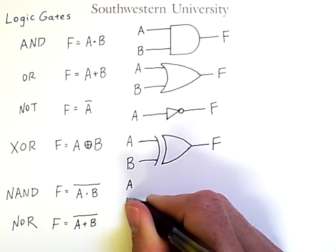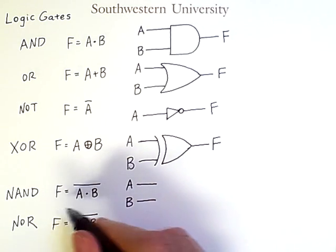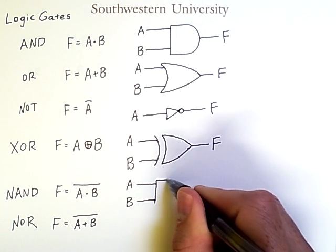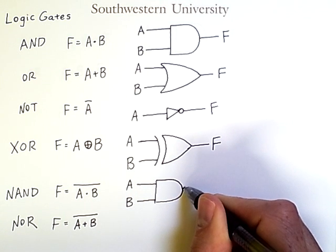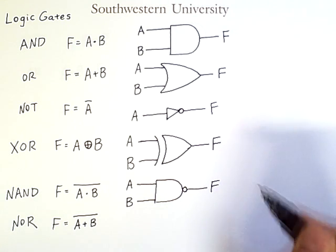A and B are the inputs, as usual. And to create a NAND gate, we simply draw an AND gate and put a little circular dot at the end that precedes the output line.